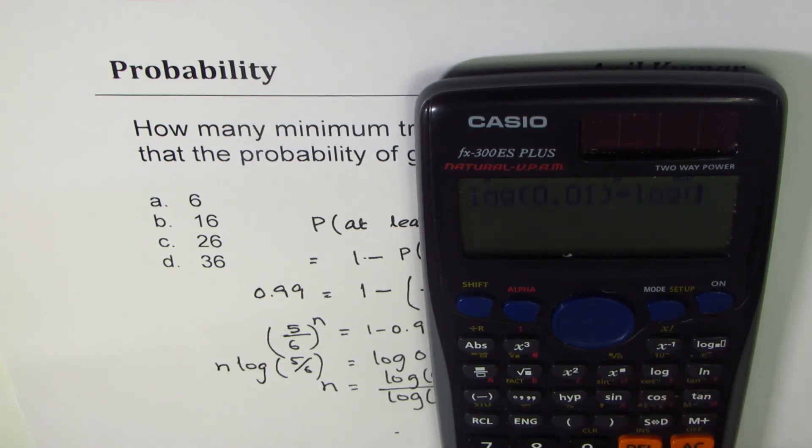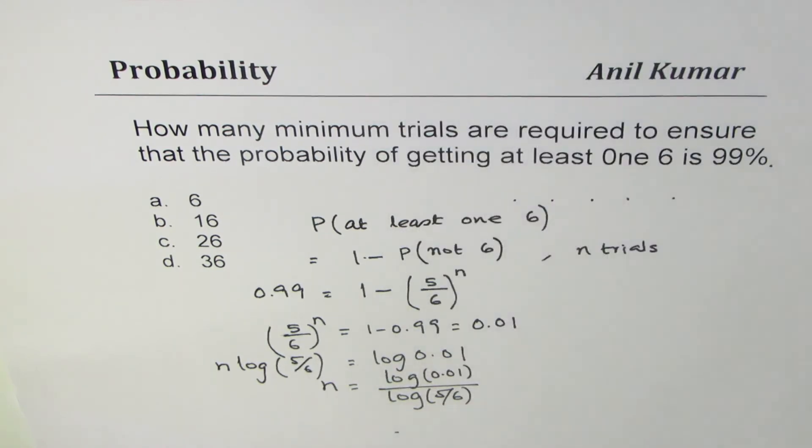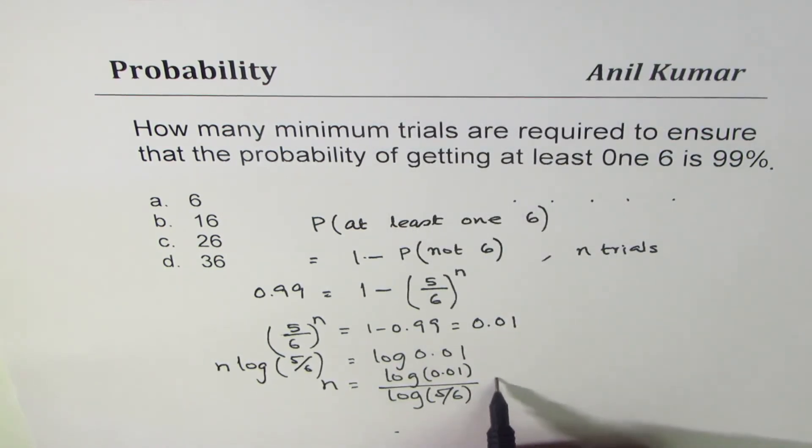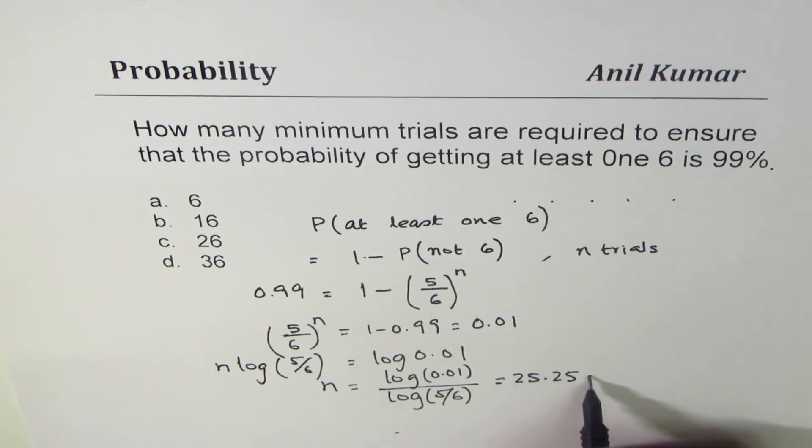5 divided by 6, bracket close, equals to 25.25. So we get 25.25, so that will always round higher, so the 26th trial will ensure that you get at least one six.